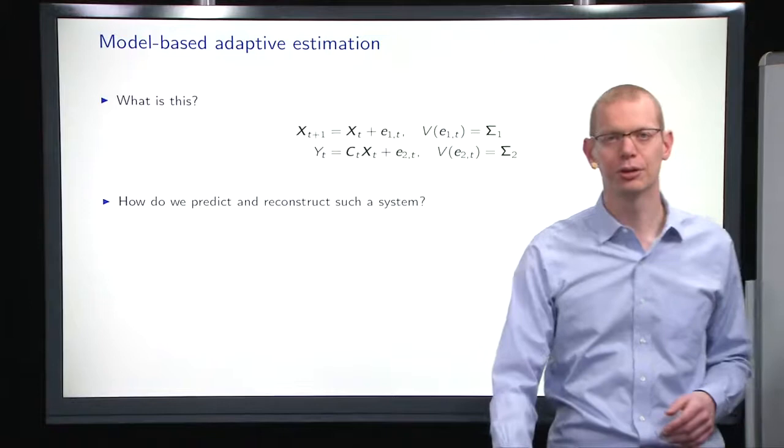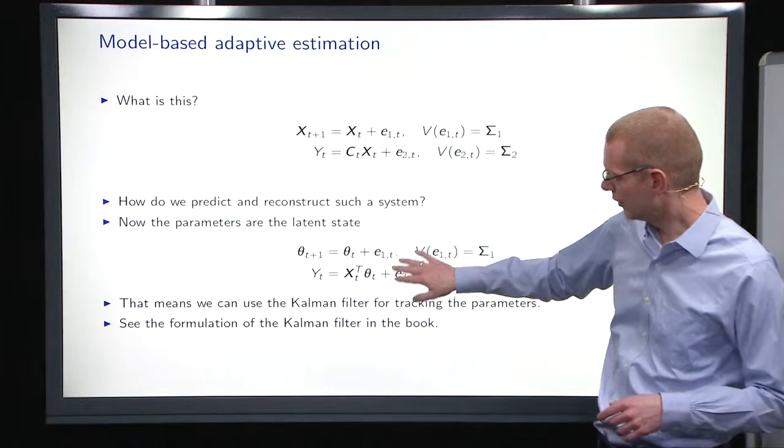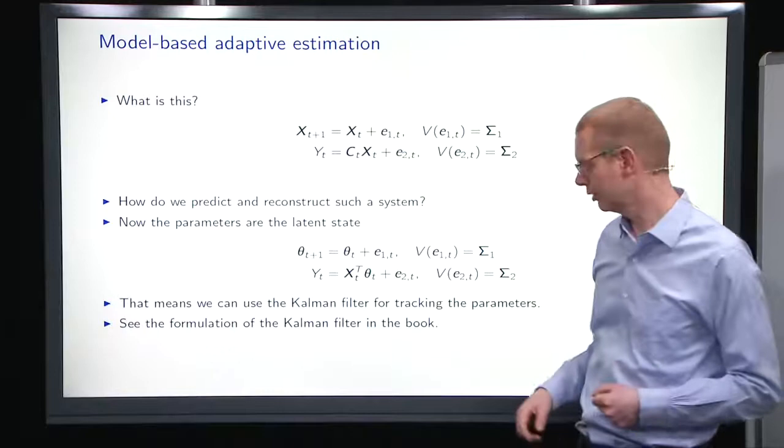And if you look at this system, well, what is it that we're doing? We're looking at a common filter, basically. So we're looking at a common filter where the parameters here are the so-called latent state, and then we have the xt here is our design matrix that we update at each point in time.